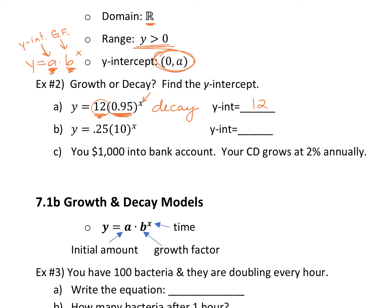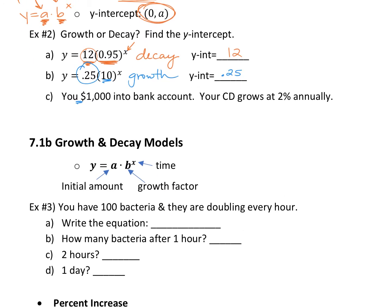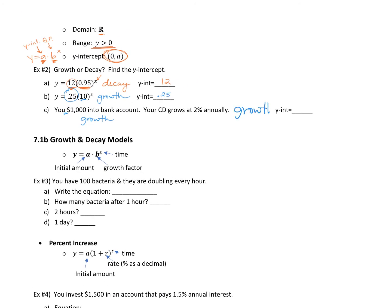Letter B: 0.25 times 10 to the x power — is that a growth model or a decay model? Growth. This number, 10, is greater than one, so this is a growth model. What's your y-intercept? 0.25 — your a term, the number out in front, is your y-intercept. For the next one: you put a thousand dollars into a bank account and that CD grows at 2% annually — is that growth or decay? Growth — we're getting 2% more money every time. What's your y-intercept? The thousand — it's your starting point.